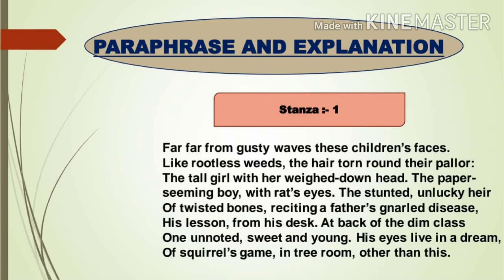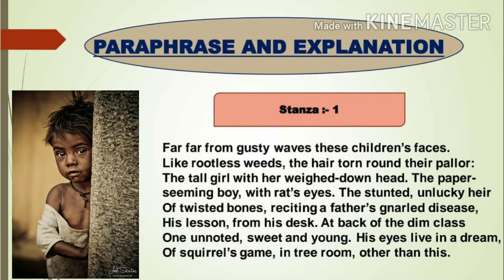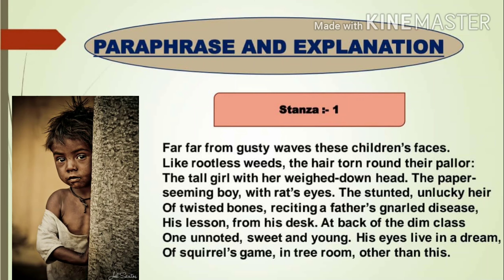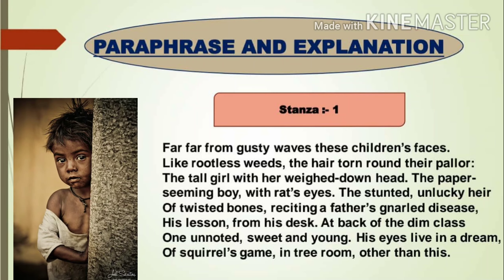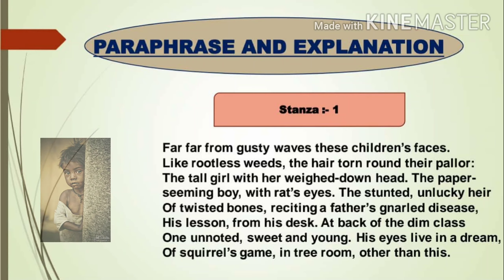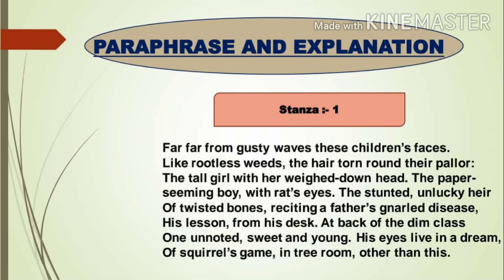The word 'pallor' stands for pale, distorted faces. The next lines read: 'The paper-seeming boy with rat's eyes, the stunted unlucky heir of twisted bones, reciting a father's gnarled disease.'